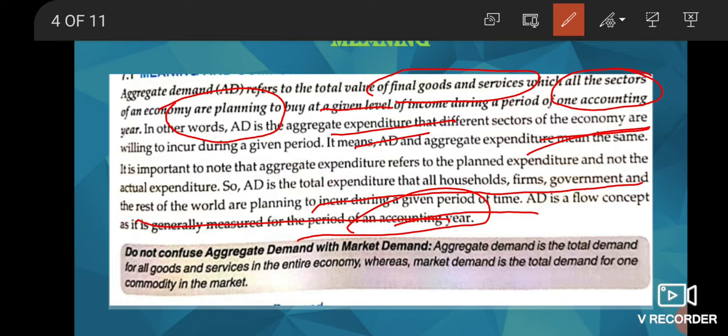Do not confuse aggregate demand with market demand. Aggregate demand is the total demand for all goods and services in the entire economy, whereas market demand is the total demand for one commodity.